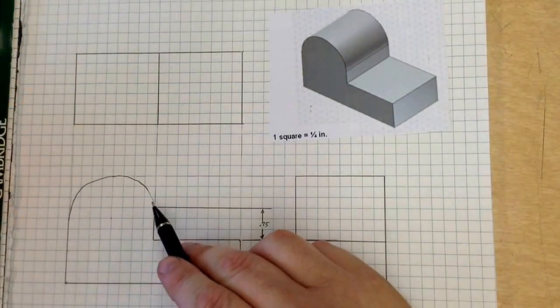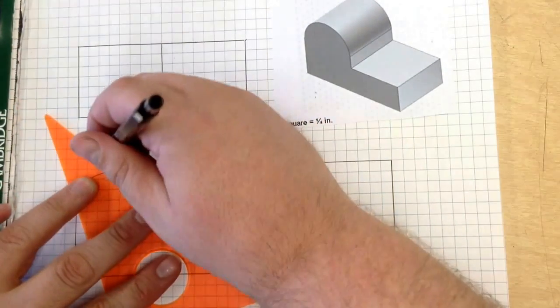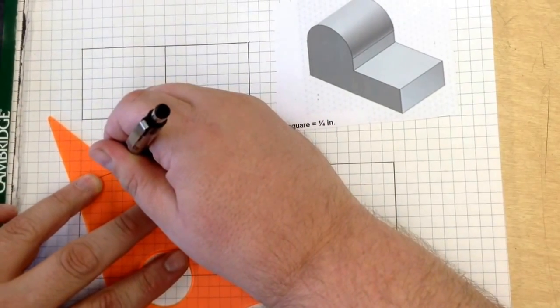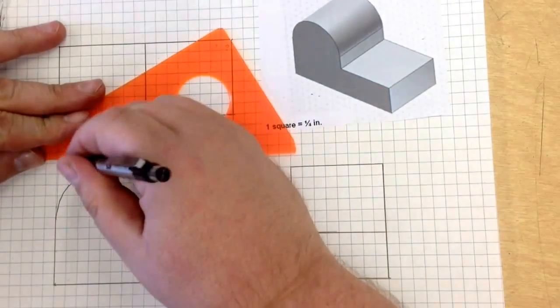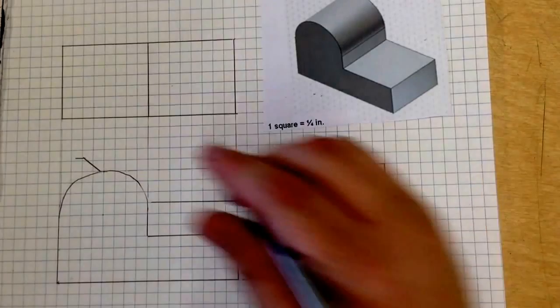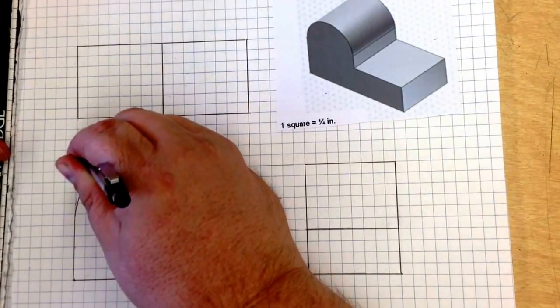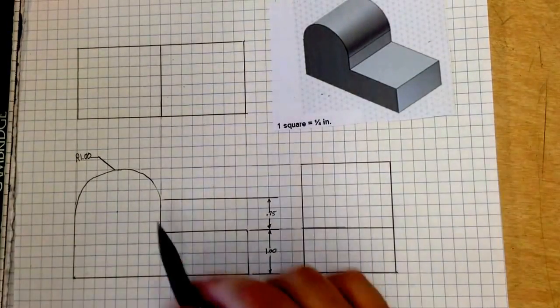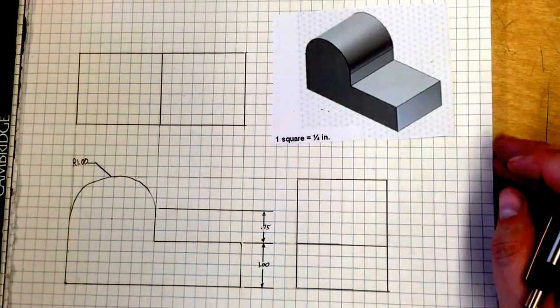Now on this one, we have a radius that we have to contend with. So I am going to come off right there, give a little bit of a flat, and then this is R1.00. So that tells us that this radius is about 1 inch.